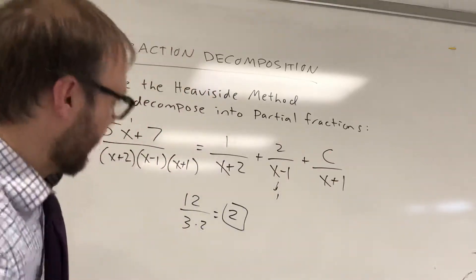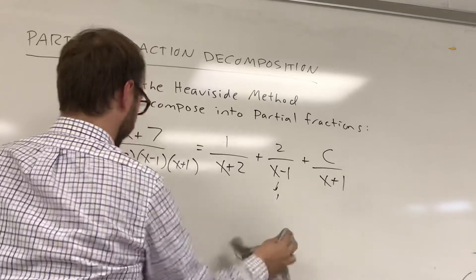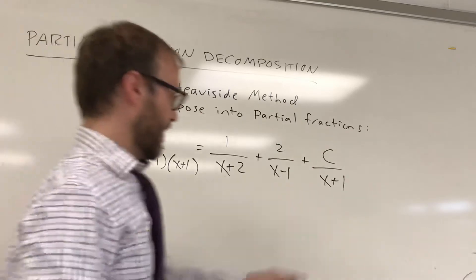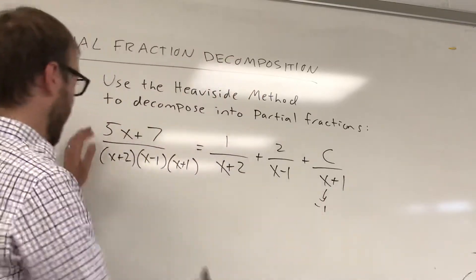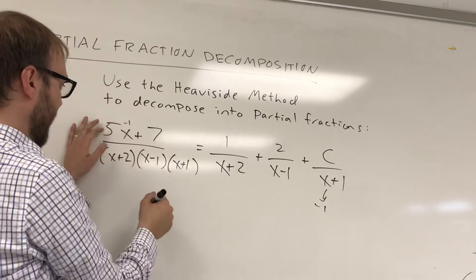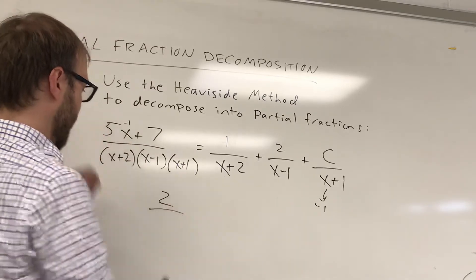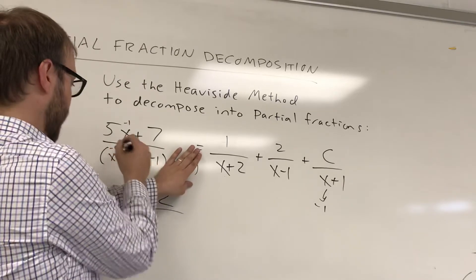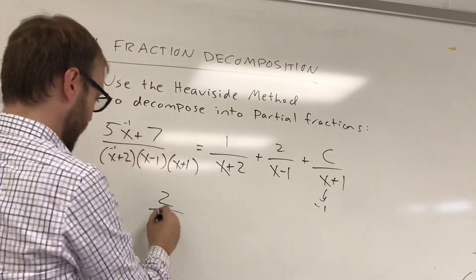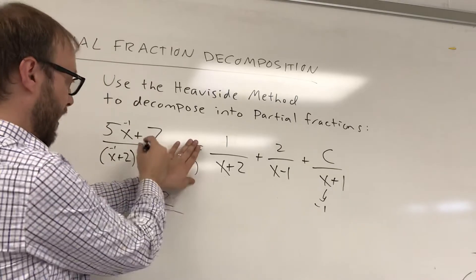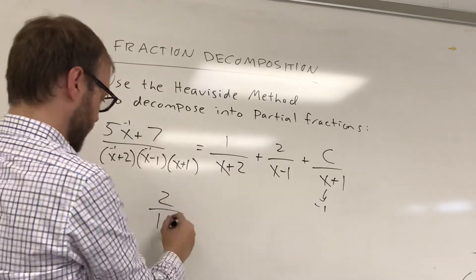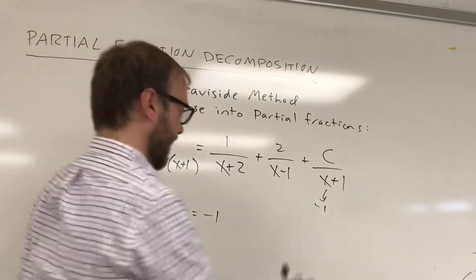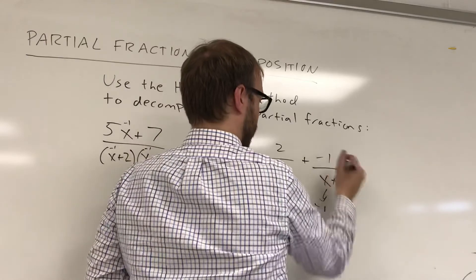And then finally, I have my C value here. And so same thing. What would make C equal zero in the denominator? That, of course, would be a value of negative 1. So I can take 5 times negative 1 plus 7. That would be 2. Cover up your x plus 1 term, because that's the one that would be zero. Negative 1 plus 2 would give me 1 in the denominator. Negative 1 minus 1 is negative 2. So we've got 2 over negative 2, which is equal to negative 1. And that's going to be my value of C.